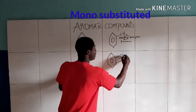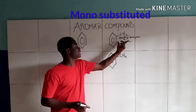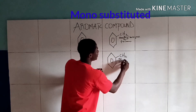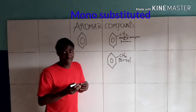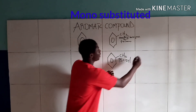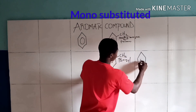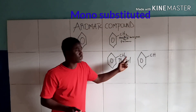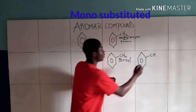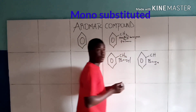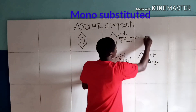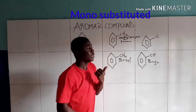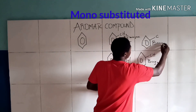For example, benzene attached to CH2 — methylbenzene has lost one hydrogen — this group is called benzyl. And benzene attached to just CH, having lost another hydrogen, is called phenyl. These are monosubstituted benzene groups.